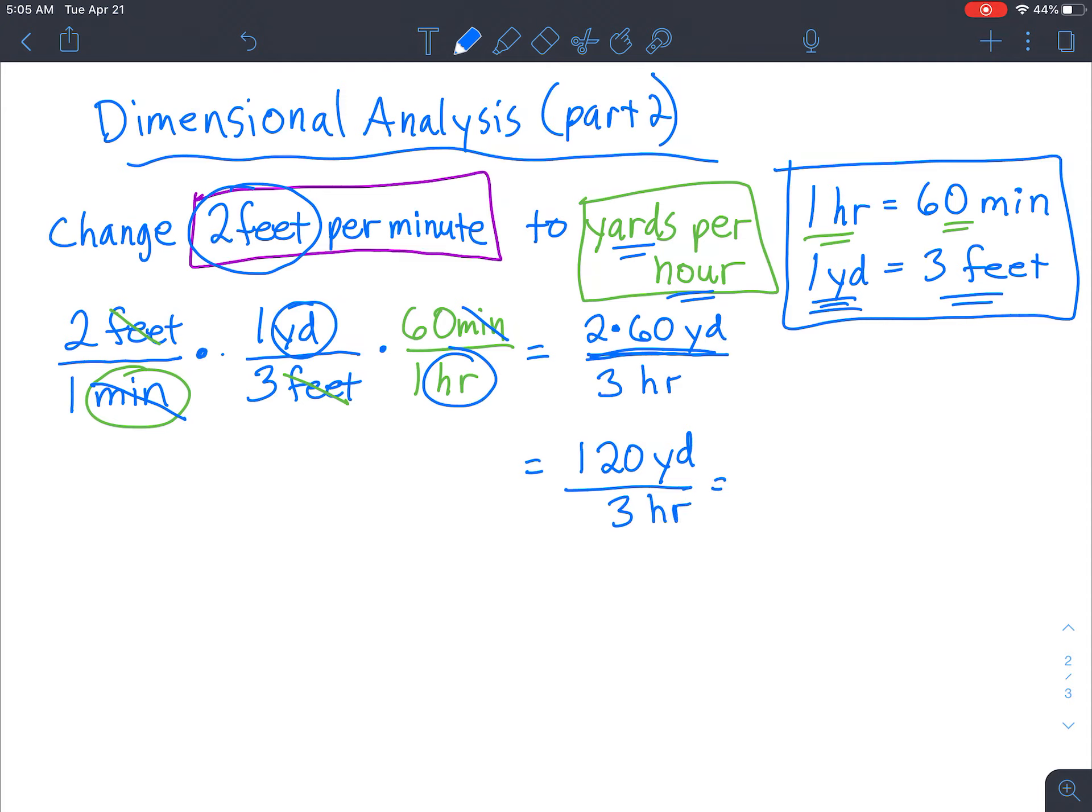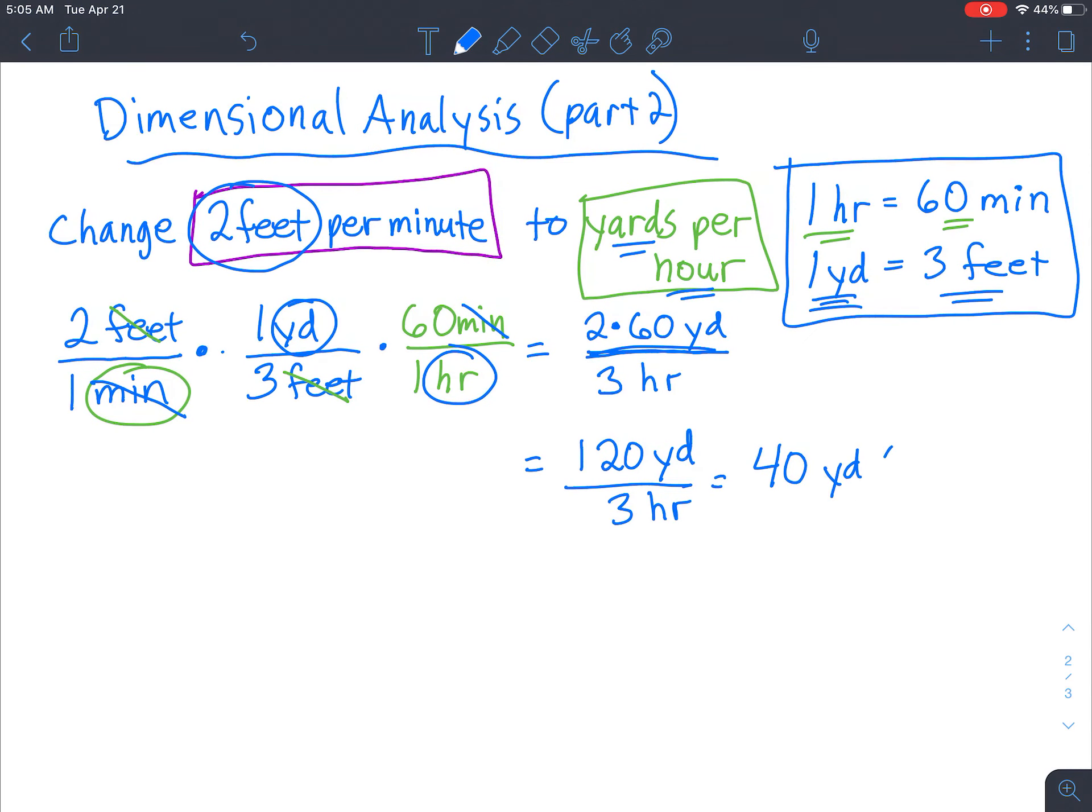Always multiply before you divide. When you have this kind of fraction, you always want to do the top separate and the bottom separate. So we end up with 120 yards over 3 hours. And when you divide 120 by 3, you can punch that into your calculator. And you get 40 yards per hour. Okay, so this was example number 1.